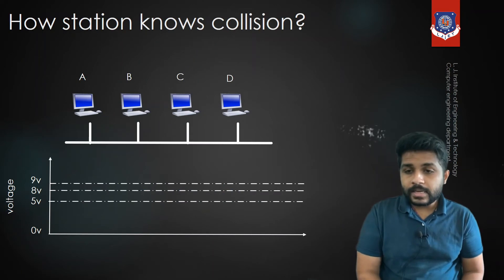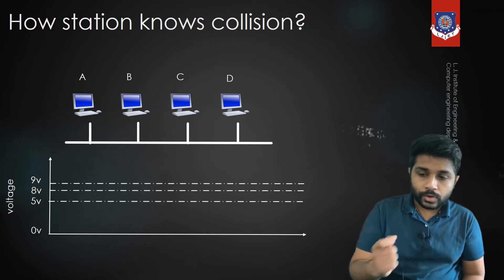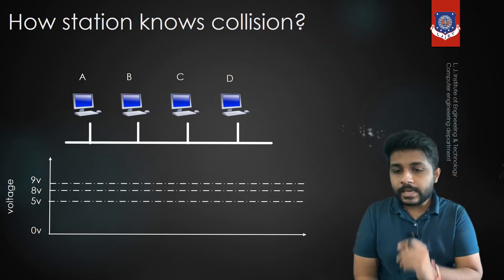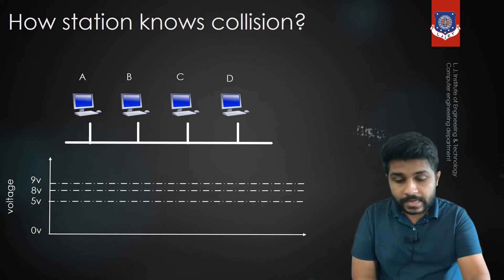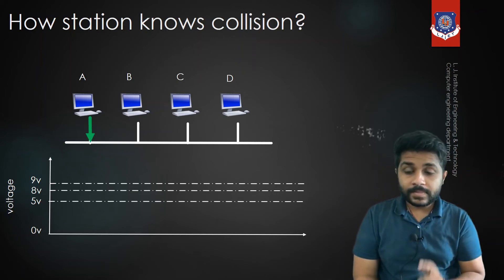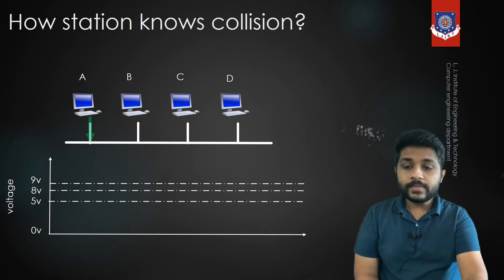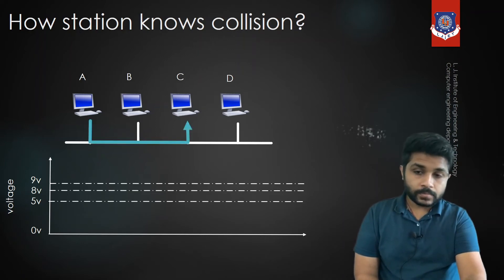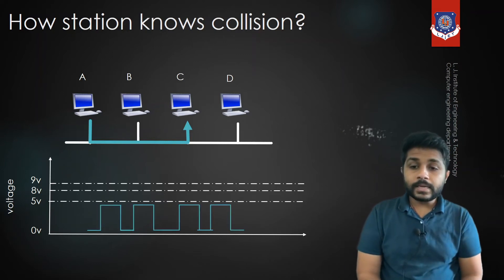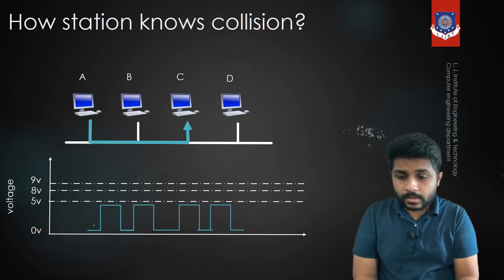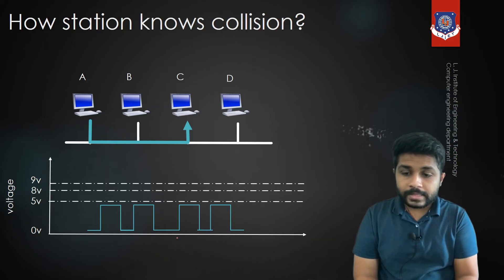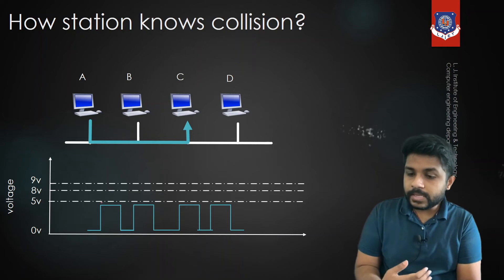The question remains: how does a station know there is a collision? Suppose device A wants to send data to C. Following CSMA/CD, device A will sense the channel. If idle, A sends data to C. In the cable, data travels as a signal having different voltage levels: 0 volts means a 0 bit and 5 volts means a 1 bit.